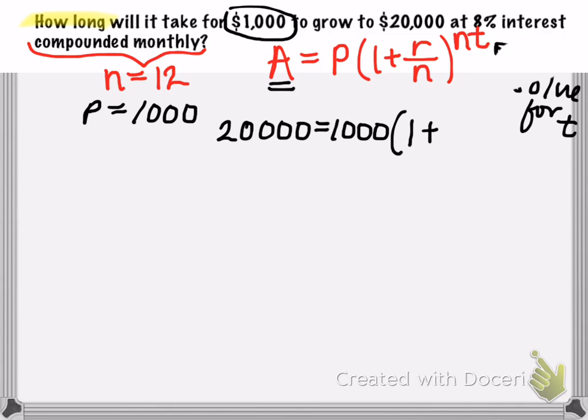Now remember, r is the interest rate, but you have to make sure that you have the interest rate converted to a decimal. So 8% interest is going to be 0.08 divided by 12, since the interest was compounded monthly.